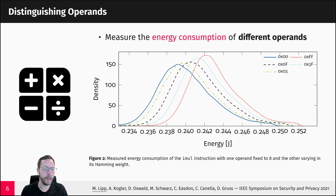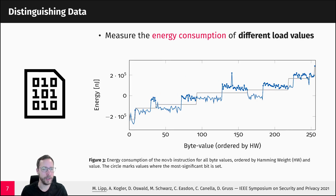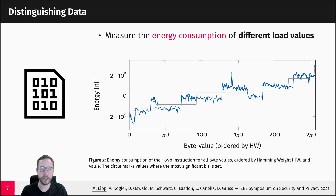But we cannot only distinguish different instructions — we can also see differences in the energy consumption of the same instruction depending on the operand used. For instance, here in this plot we see the measured energy consumption of the IMUL instruction where one operand is fixed and the other varies in its Hamming weight. As we can see, the more bits that are set in this operand, the higher the energy consumption is.